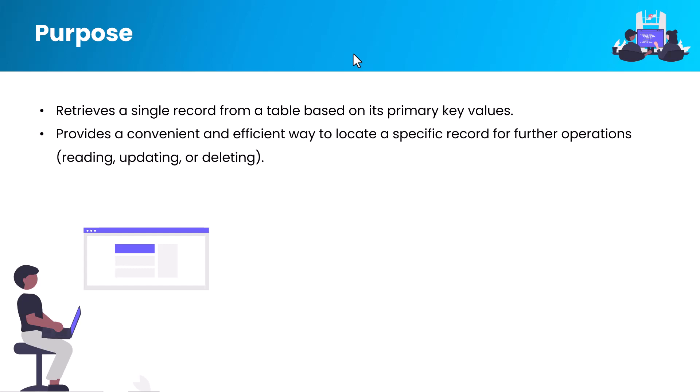The second purpose is that it provides a convenient and efficient way to locate a specific record for further operations. You can select a particular record and view it, read the data from it, update it, or delete that particular record after the find operation — after finding that particular record from the table.